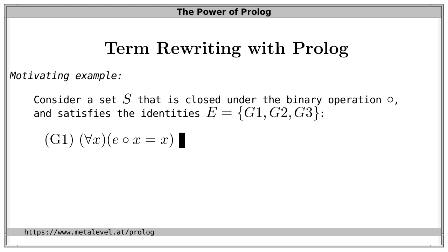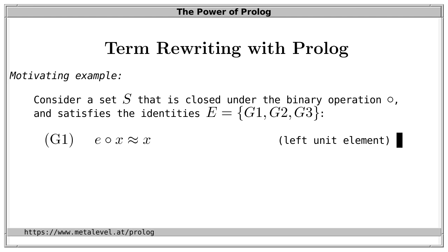We adopt the convention that these equations are implicitly universally quantified — that is, we omit the for-all quantifier. The term E circle X is certainly not equal to X in the usual sense of equality, so we are talking about our own version of equality for which specific laws or axioms hold. To make clear we are talking about equality on the object level instead of the meta level, we use a wavy equal sign. This identity G1 states that E is a left unit element, because E circle X is again X.